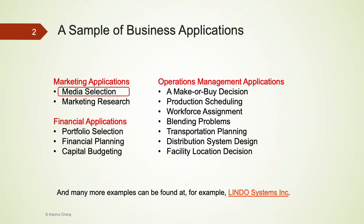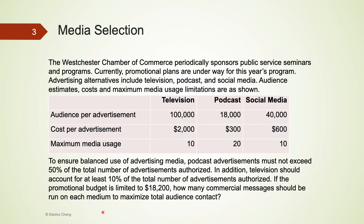The first example we will look at falls into media selection for marketing. The application of linear programming in media selection is designed to help marketing managers allocate a fixed advertising budget across various advertising media, such as social media, television, internet, podcast, and radio.